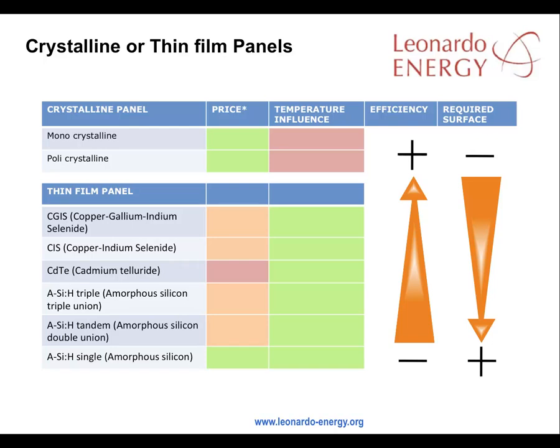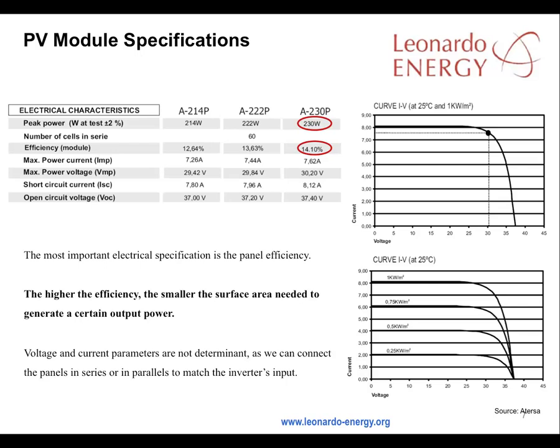Temperature becomes relevant in locations where temperatures are above 25 degrees centigrade. With PV modules, panel efficiency is the most important electrical specification to be checked. The higher the efficiency, the smaller the surface area needed to generate a certain power output. Voltage and current parameters are not determined because the panels can be connected in series or in parallel to match the inverter.